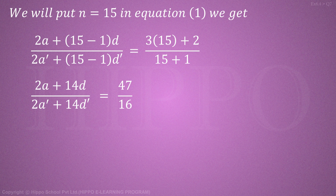ऊपर से 2 common लेंगे तो बचेगा (a + 7d), नीचे से भी 2 common लेंगे तो आएगा (a' + 7d'). ऊपर वाला 2 और नीचे वाला 2 cancel होंगे. हमारे पास answer में आया: (a + 7d) / (a' + 7d') = 47 / 16.